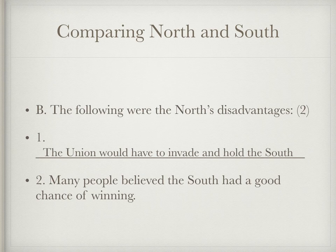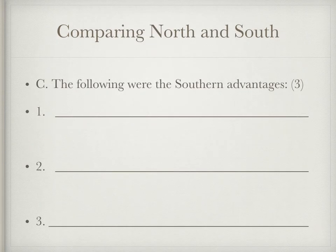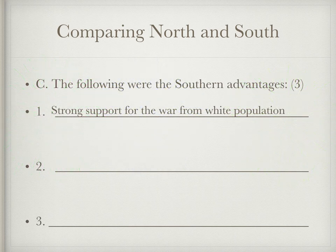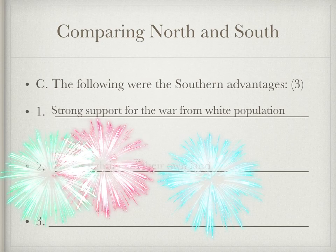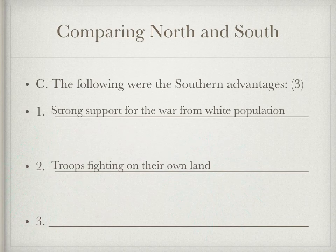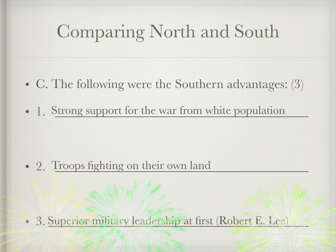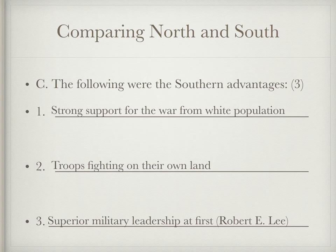What about the South's advantages? One: support for the war in the South was very strong — the majority of the white population supported it, which was not the case in the North. Two: most of the fighting would be done on their own land, which is always an advantage. The North had to be the aggressors and go down to control the South. Three: superior military leadership, especially Robert E. Lee. At the beginning of the war, southern leadership far outperformed northern leadership.